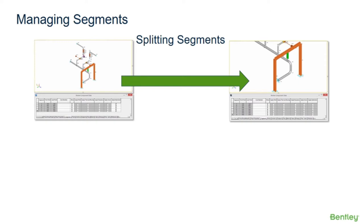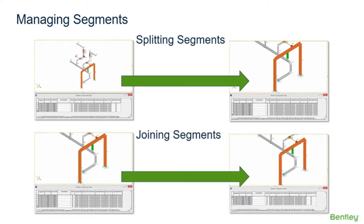The split segment command will split the existing point located on a common segment into two segments. Operations like the split segment command enable users to easily model piping which is or is not subjected to wind loading — for instance, indoor versus outdoor piping in one single model. It can also be used to break the model by splitting the segments and then deleting the point on one of the segments.